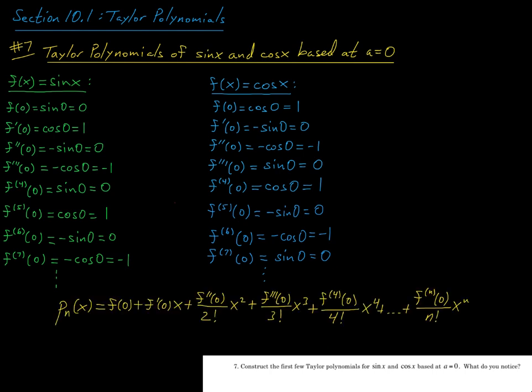Okay, so now to construct the nth Taylor polynomial based at a equals 0, this is p_n of x. We're going to have f of a, which is just f of 0 now, plus f prime of 0 times x minus a, but again, since a is 0, we're just going to get an x, plus f double prime at 0 over 2 factorial times x squared, and then we're going to get f triple prime at 0 over 3 factorial times x cubed, so on and so forth until you get up to the degree n term.